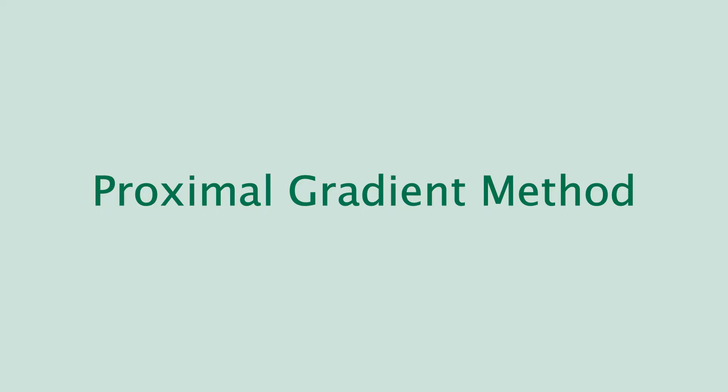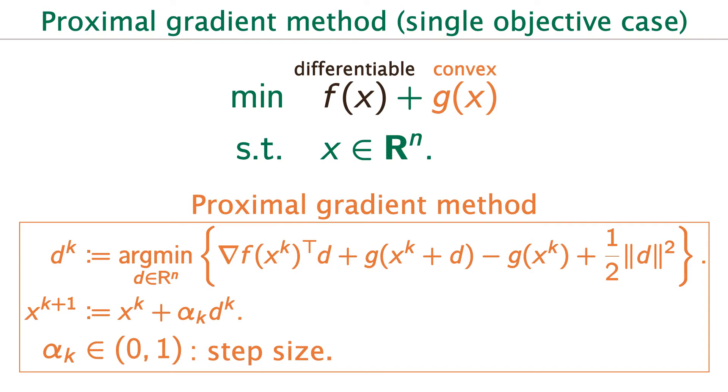Next, I'll explain proximal gradient methods. Proximal gradient method is used for the problem whose objective function is the sum of differentiable and convex functions. Differently from steepest descent method, it considers first-order approximation only for differentiable part f. If g equals to 0, then this algorithm coincides with steepest descent method.